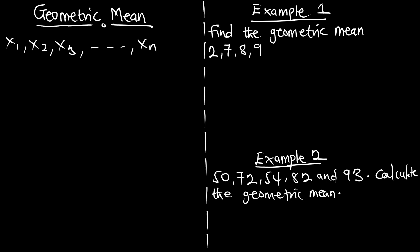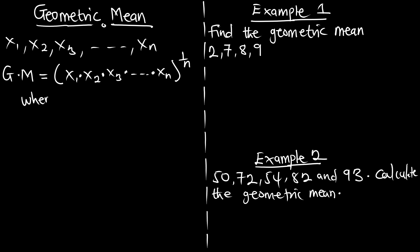Always know the difference between grouped and random discrete variables — these are just random. To find the geometric mean, which is represented by GM, it is very simple. It is going to be x1 multiplying x2 multiplying x3, multiplying up to xn, raised to the power 1 over n. This is the formula to find the geometric mean for random discrete variables, where n is the number of variables.